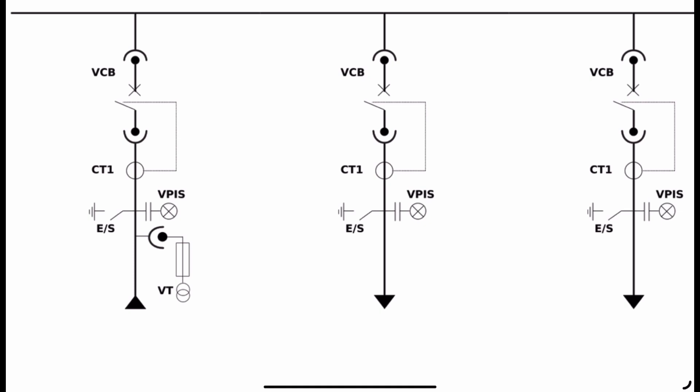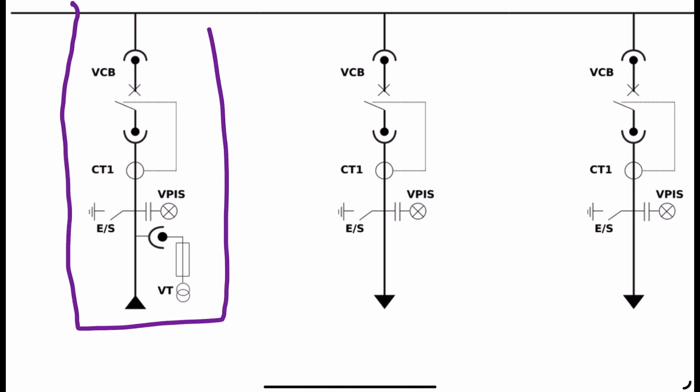This vacuum circuit breaker and all associated components will be enclosed inside a metal enclosure, and that is what we call the incomer panel. This is where I accept the incoming supply. So this is part one — the incomer panel. From this incomer panel, we need to provide supply to the different manufacturing units.